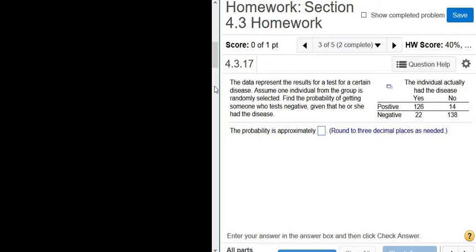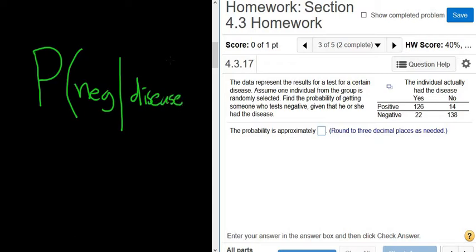Anyways, let's do this problem. So find the probability, so I'll write the P of getting someone who tested negative. So I'll just put neg for negative, given that. So whenever you see a given that, you write the line. He or she had the disease. So negative given disease.